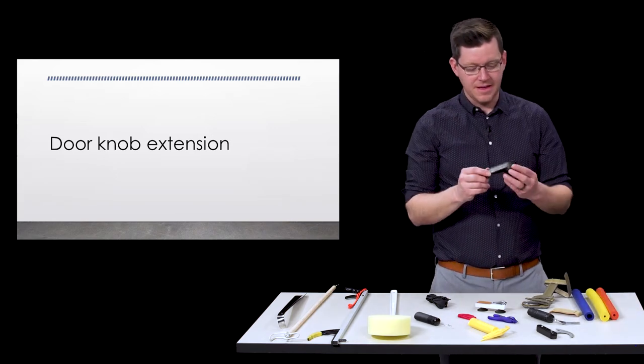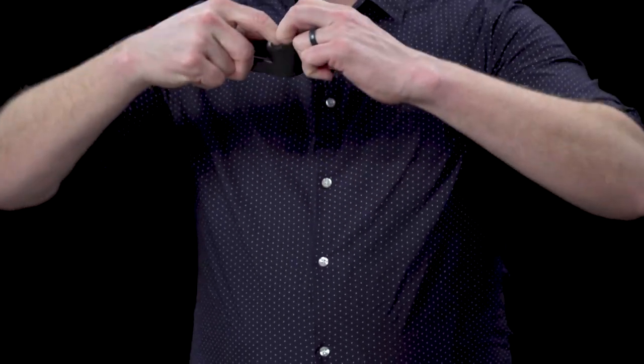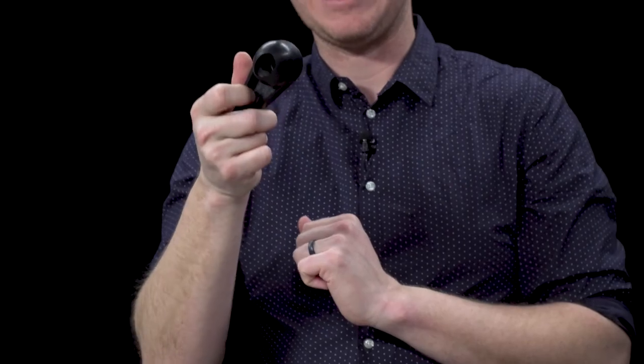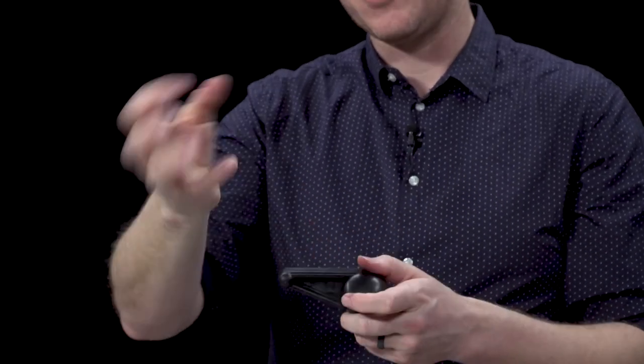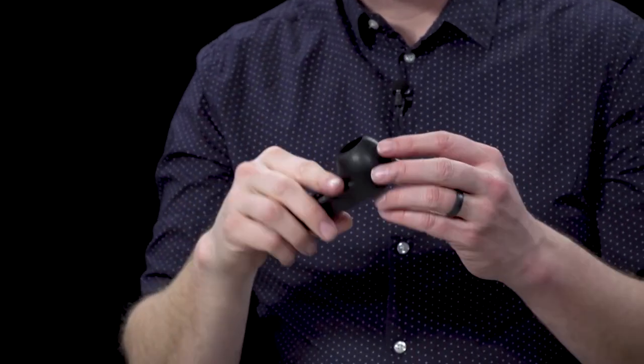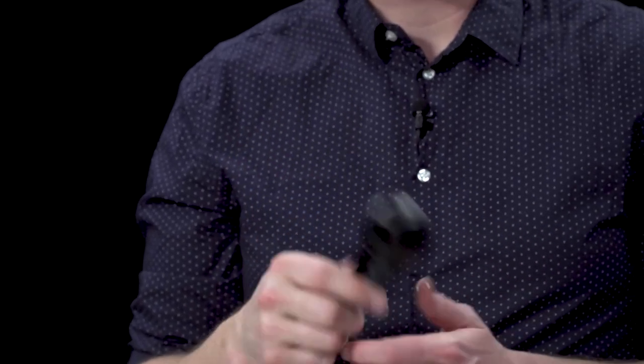And then lastly would be this doorknob extension. It can be stretched out and put on to most any doorknob and then it makes any normal turn knob into a lever knob which is a little bit easier for you to grip on to and open and close the door. So it really gives you some simple door opening access adaptations.